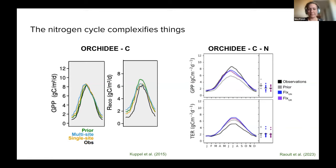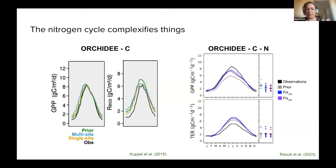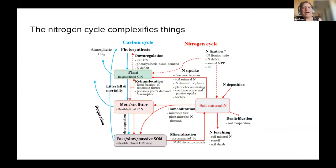However, when we look at ORCHIDEE-CN, which has the nitrogen cycle, we're no longer able to fix this overestimation in respiration using k_soil_c. Instead, the k_soil_c parameter goes into fixing GPP, so with respiration and GPP going in opposite directions, we're unable to fix respiration. This seems strange because k_soil_c should only affect respiration by changing the initial carbon pool, not GPP.